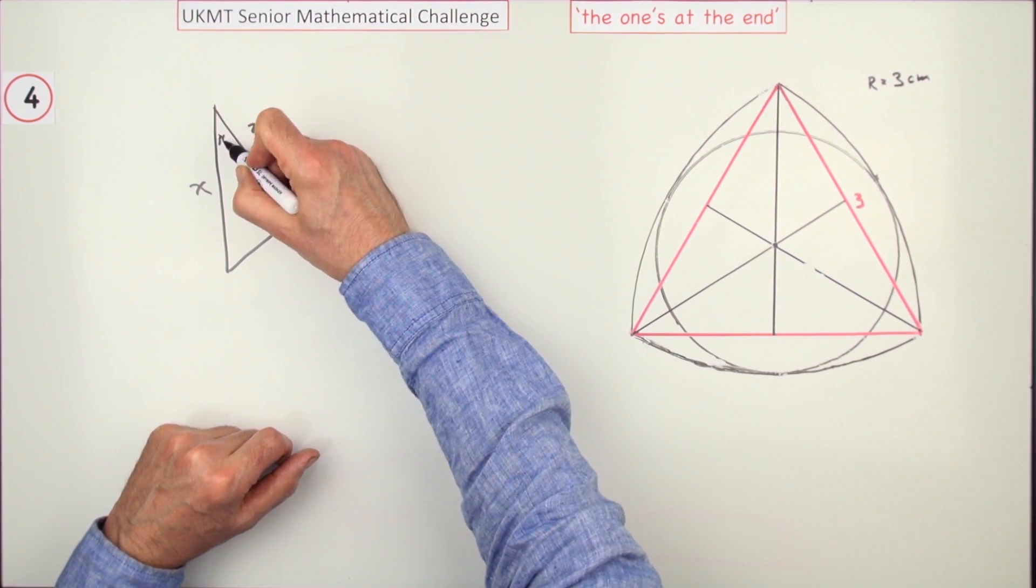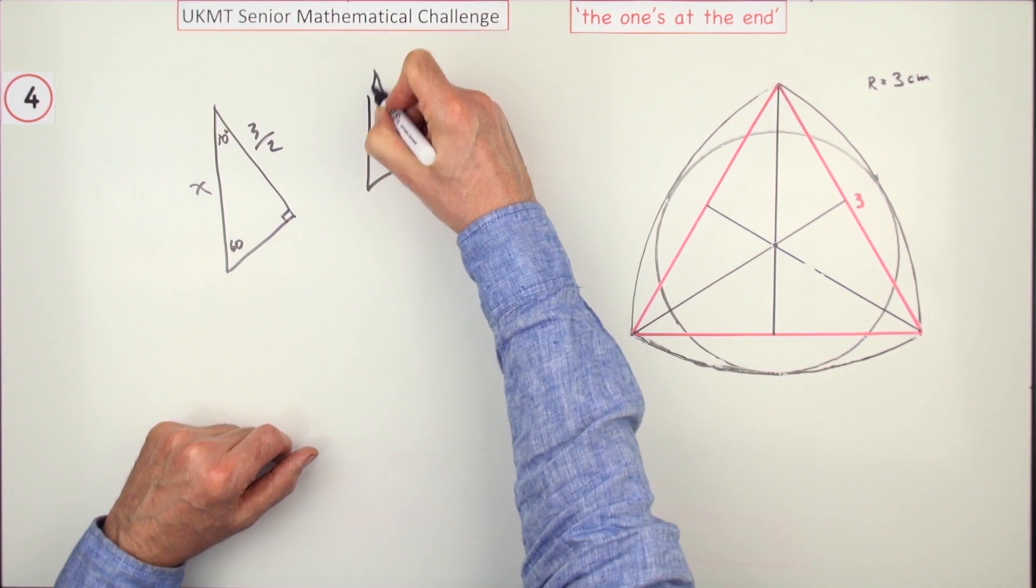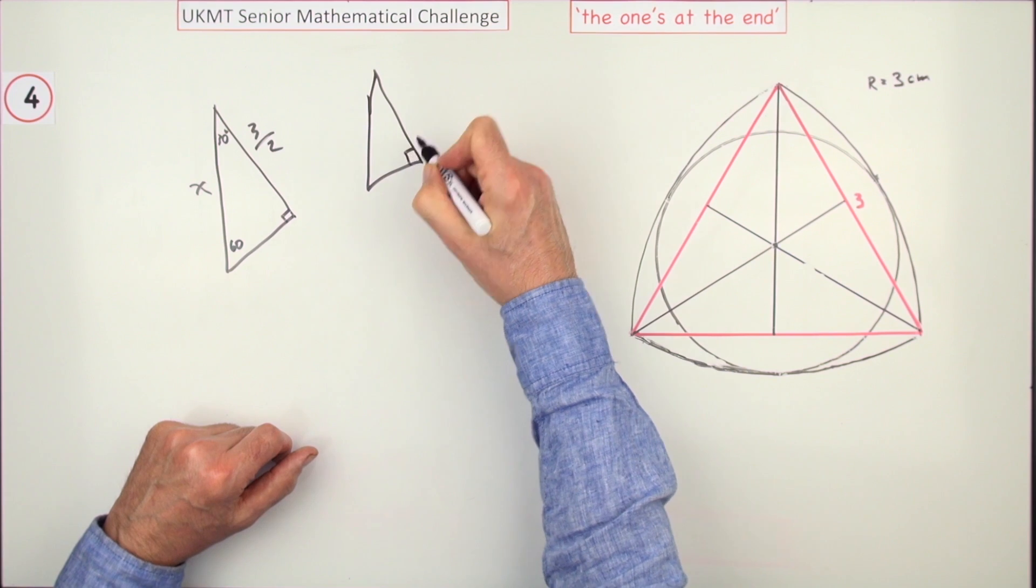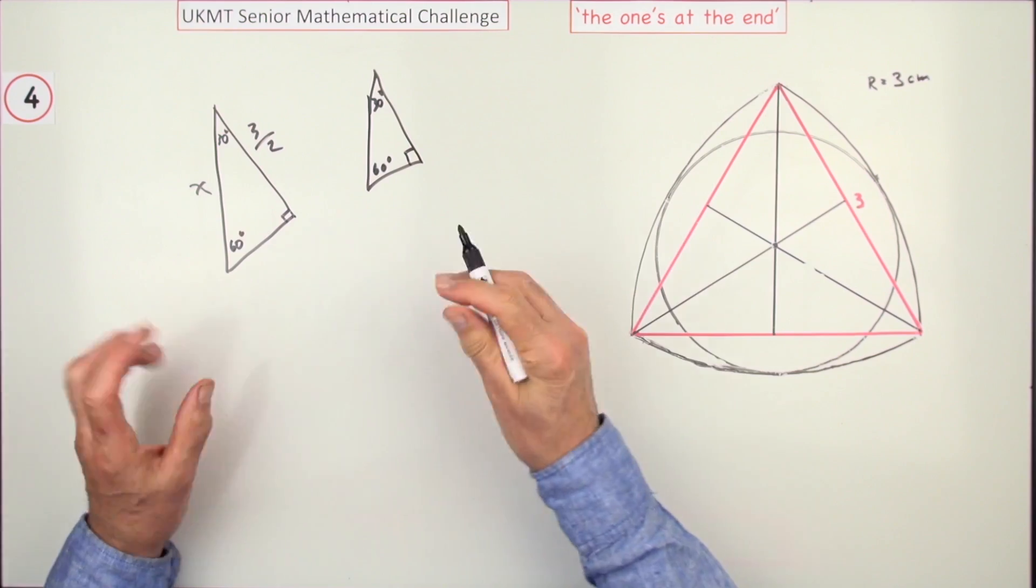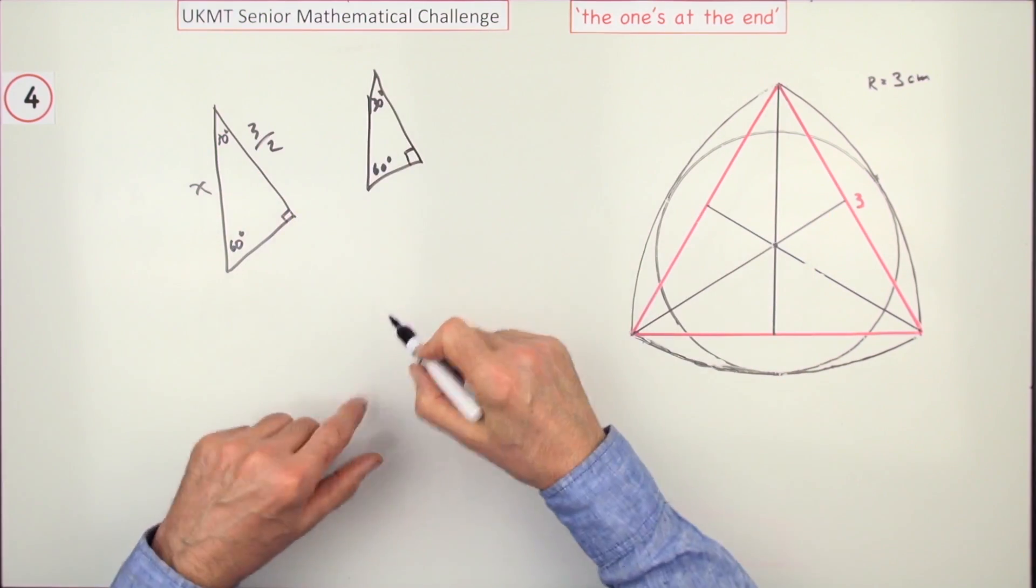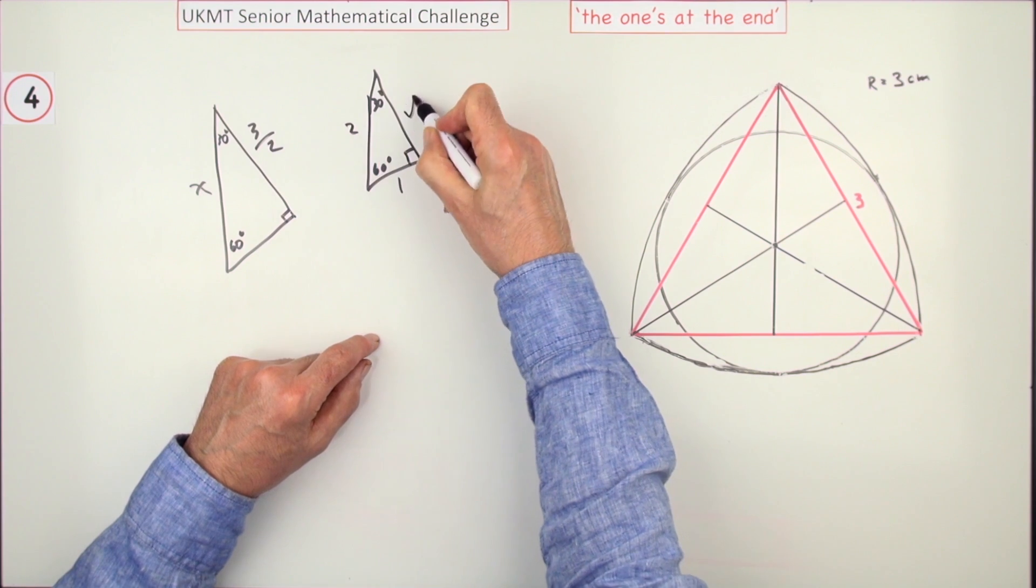Since it's a 30-60 triangle, it'll be similar to any 30-60 triangle. There's 30, there's 60. If you're doing this multiple choice, you wouldn't bother with all the degree signs. So the sides would be 1, 2, √3.